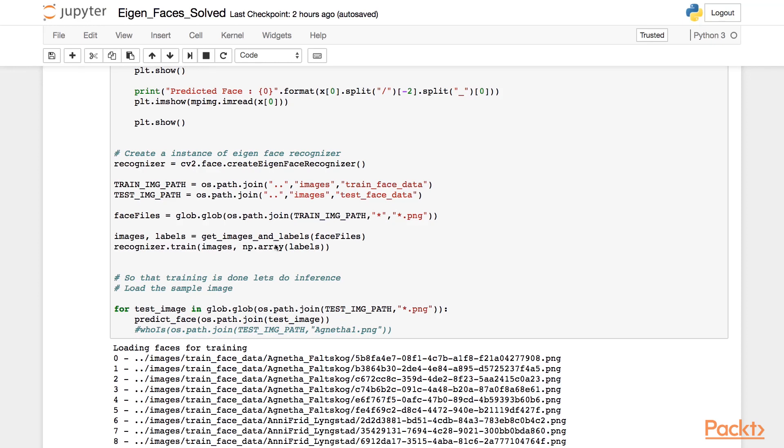This would train our model on the training images. Next, we loop through every test image and call the function predict face with the test image. Let's quickly see what predict face does.